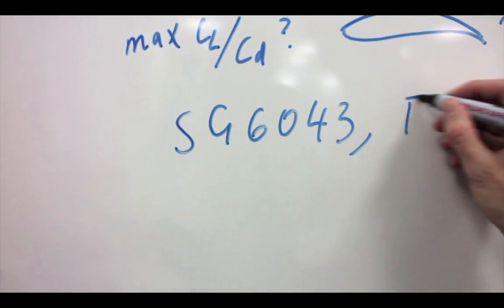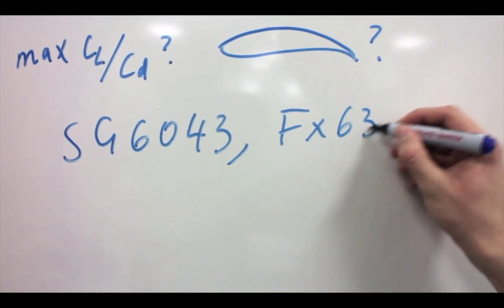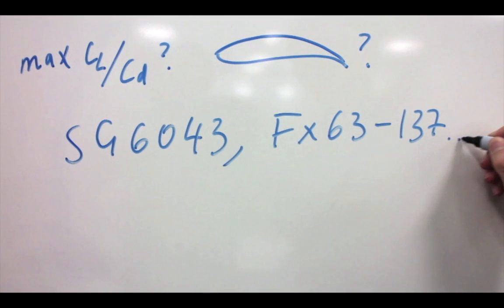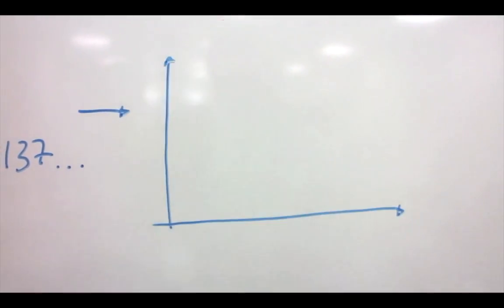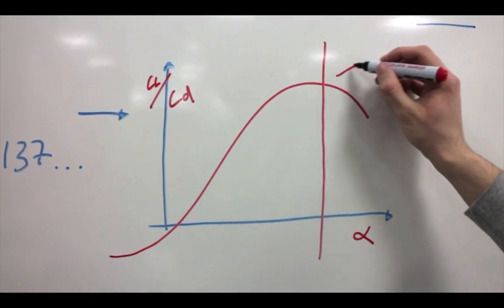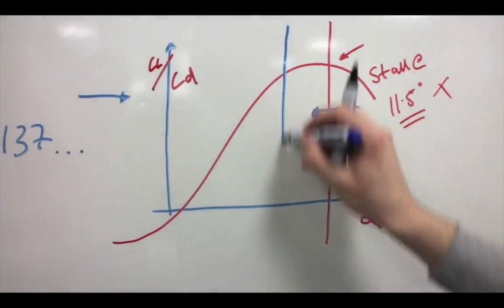We considered placing a thicker airfoil at the root, such as the FX63137, but we would have had to place this less efficient airfoil too far along the blade to be structurally useful which would have lost us too much power. This airfoil produces its best value for this coefficient at around 11.5 degrees. However, we opted to set the blade to an incidence of 7.5 degrees to allow for any deflection that could deform the blade and push it into stall.